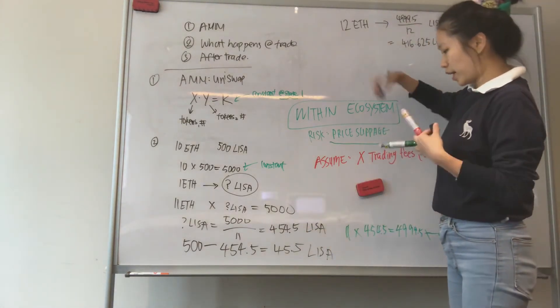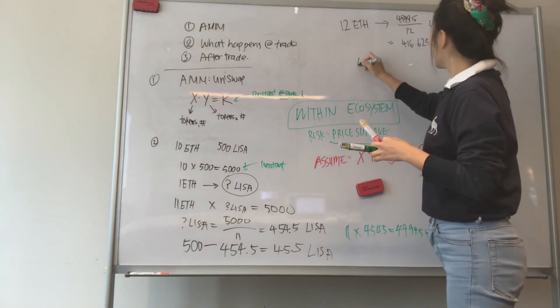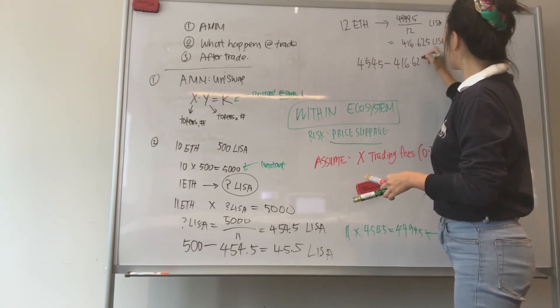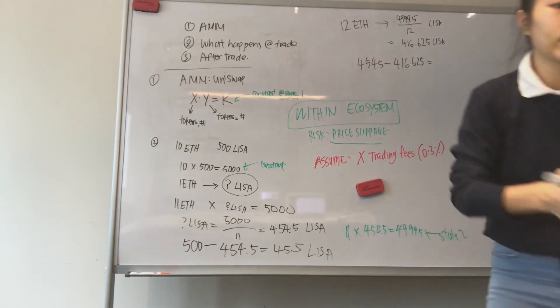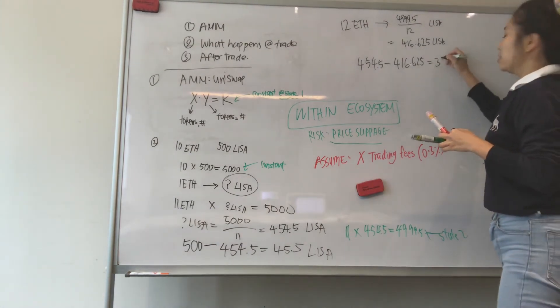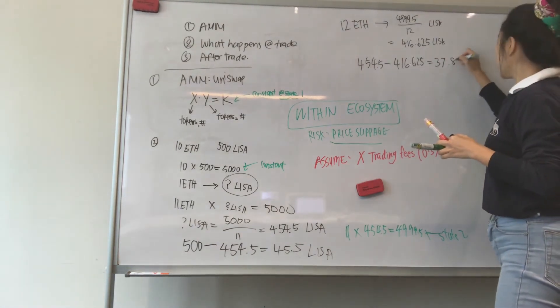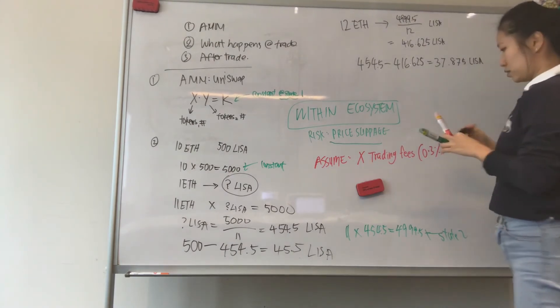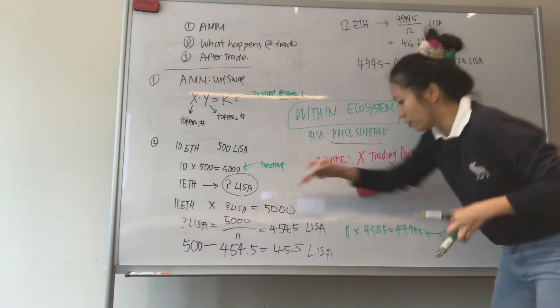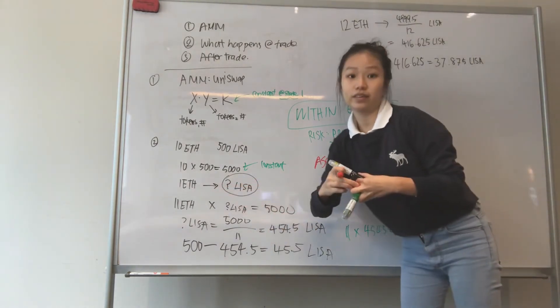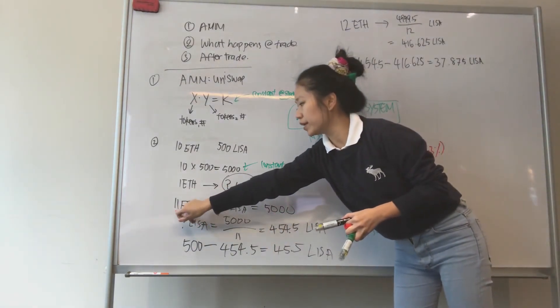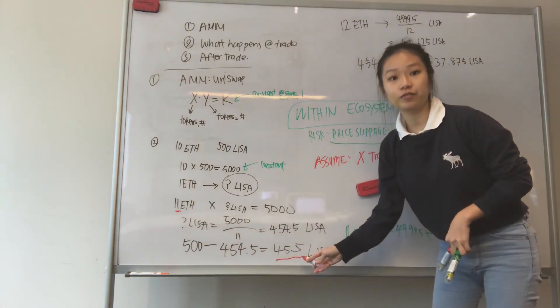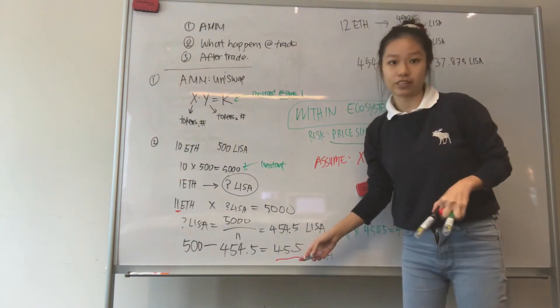And so how much will I get? I will get 454.5 minus 416.625. You get 37.875 LISA tokens. So do you see a massive difference? If you are the first ETH to come in, right? 11 ETH. You get this amount. 45.5 tokens. 45.5 LISA tokens.